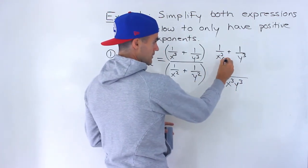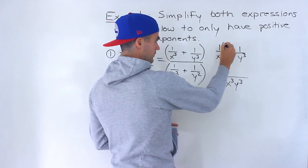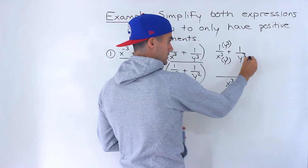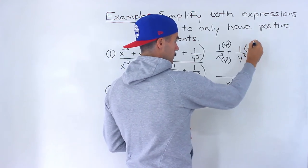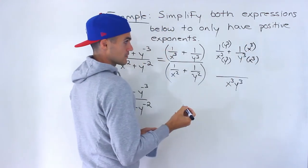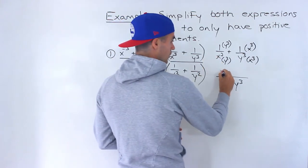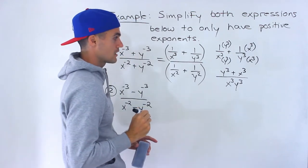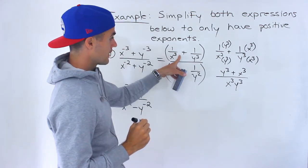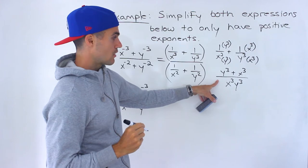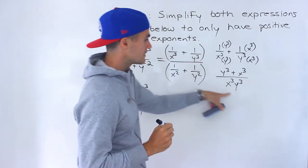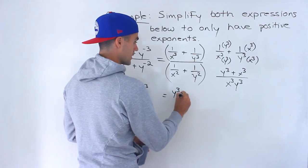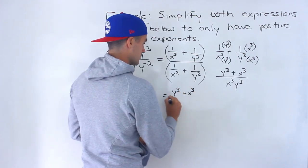To get the first term to the common denominator we multiply by y cubed, so we multiply the top by y cubed. To get the second term we multiply by x cubed, so we multiply the top by x cubed, and we end up with y cubed plus x cubed in the numerator over x cubed y cubed. So this bracket is now one fraction and I'm going to rewrite that in the main simplification.